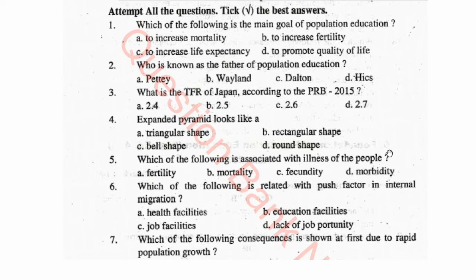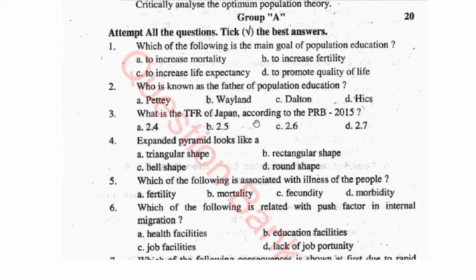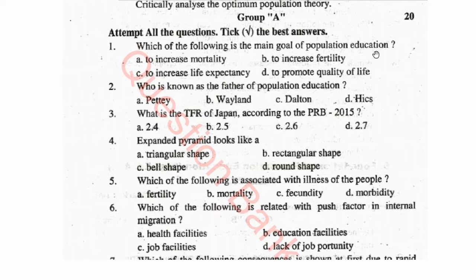Now for the objective questions — attempt all the questions and take the best answers. Objective question 1: Which of the following is the main goal of population education?